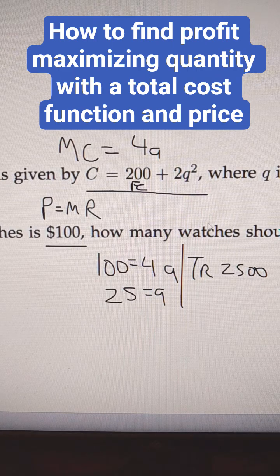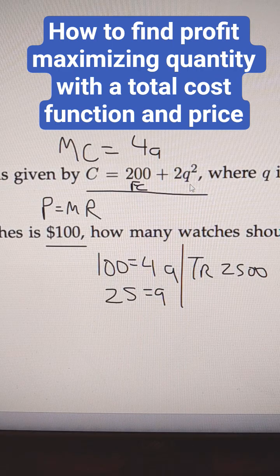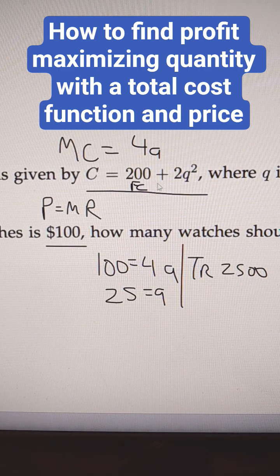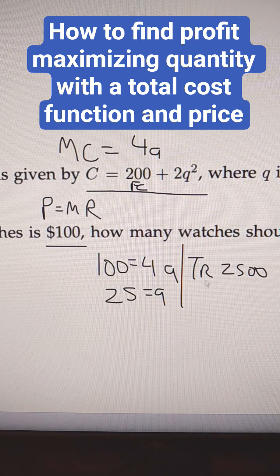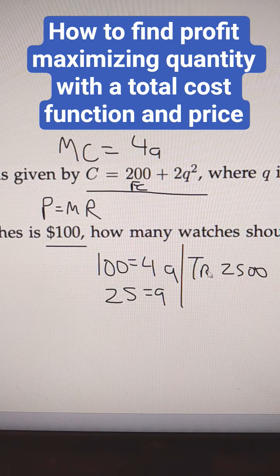And then if you wanted the total cost, we're just going to say 200 plus 2 times 25 squared. That could show your total cost. The difference between those is your total profit.